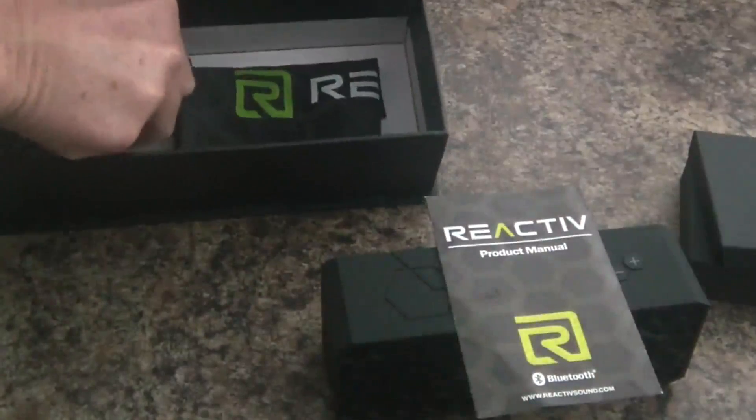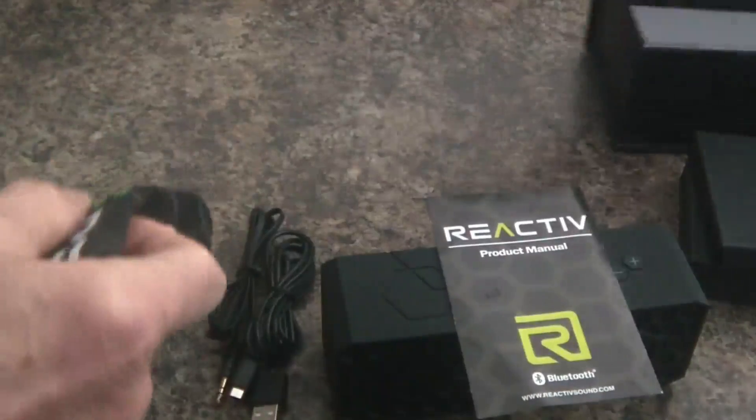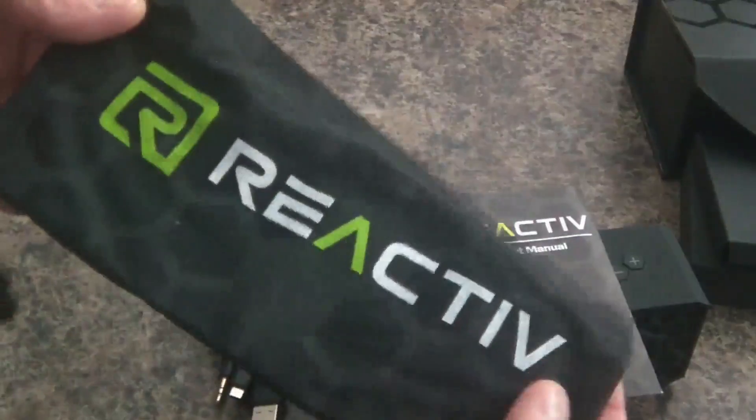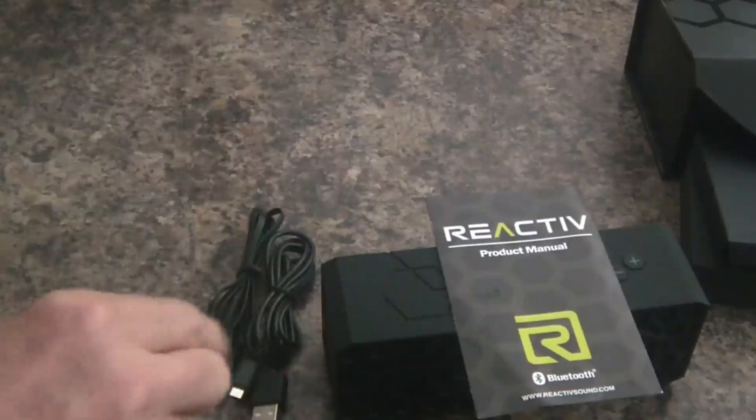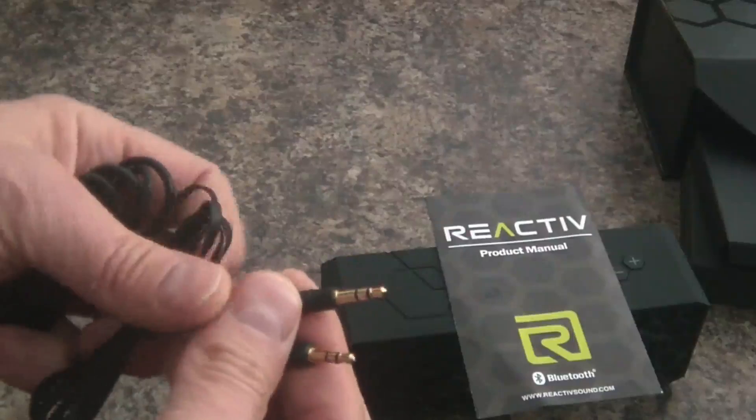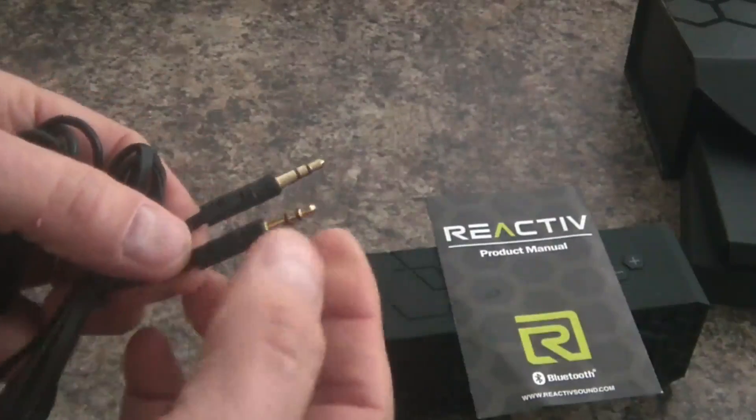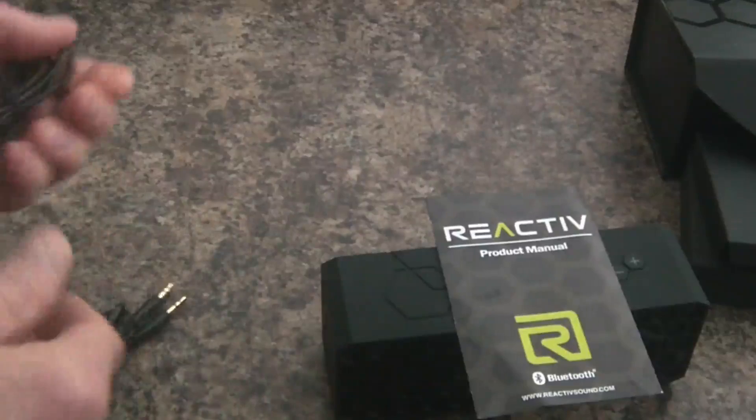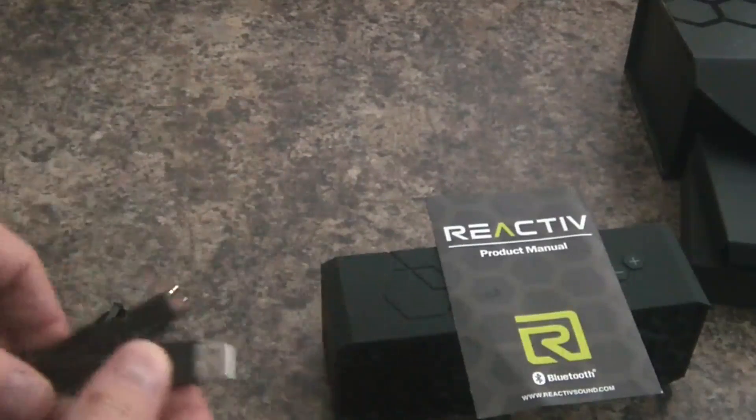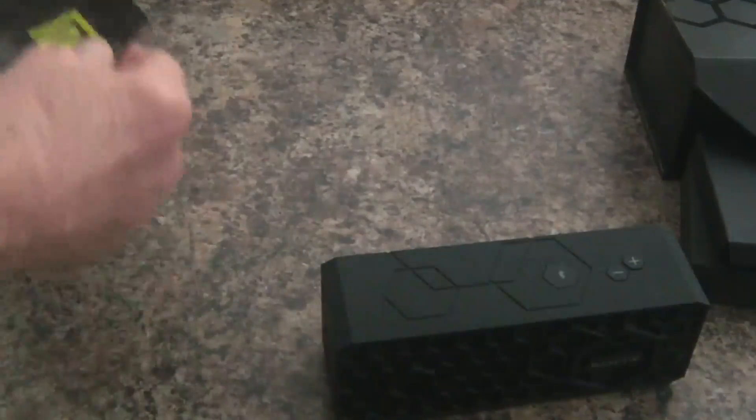This is the product manual. Then you get two cables and a little carry bag here. The carry bag has the logo on it and has a nice drawstring. Then you get two flat cables: this is the 3.5mm auxiliary cable with gold-plated tips, and the other cable is the USB to micro USB charging cable.